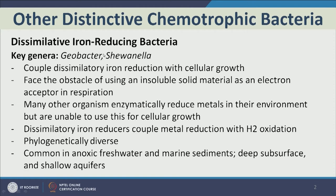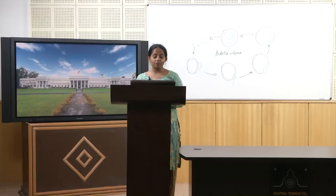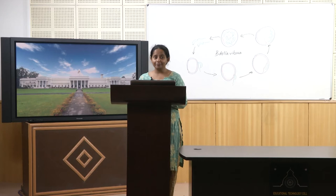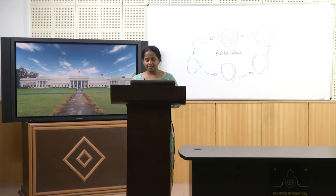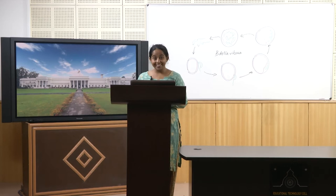The key genera are Geobacter and Shewanella. Geobacter was first discovered by a very famous scientist, Dr. Derek Lovely, in Massachusetts. This discovery along with many others brought him great fame, and he is now one of the stalwarts of biogeochemistry — the biology of earth along with its interactions in chemistry. There are a lot of career prospects in applied environmental microbiology. Dr. Derek Lovely has been one of the richest persons in Massachusetts, even richer than the governor, only through his research in applied environmental microbiology.